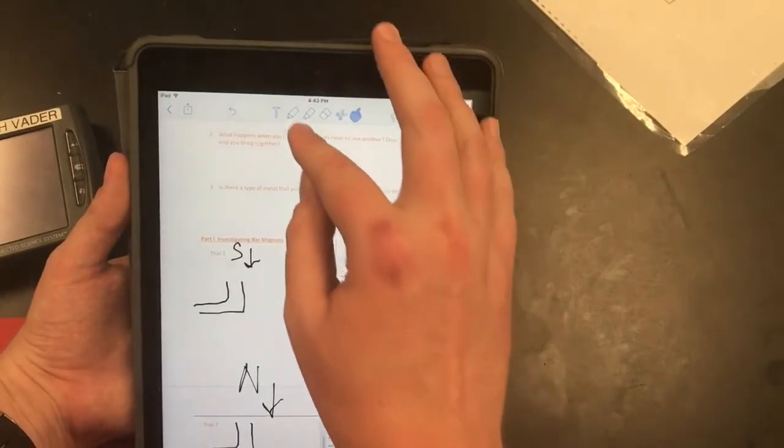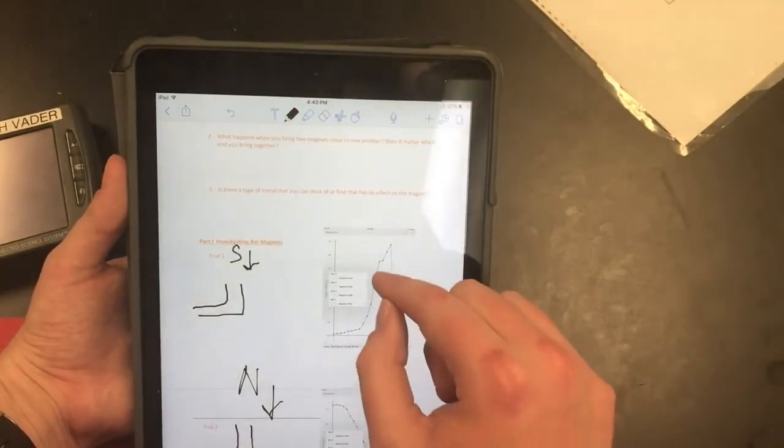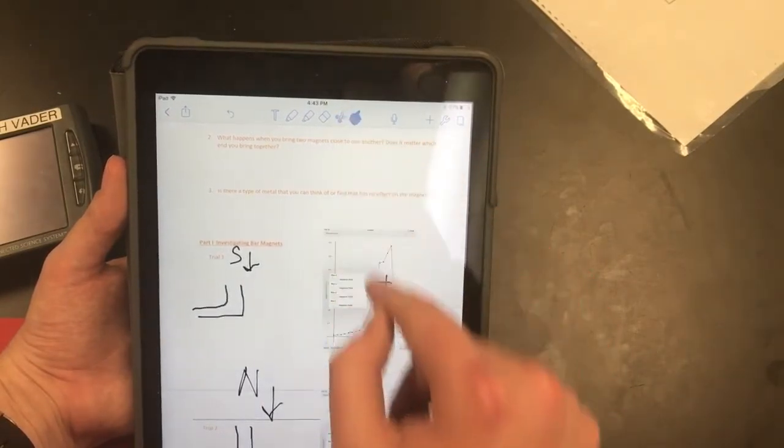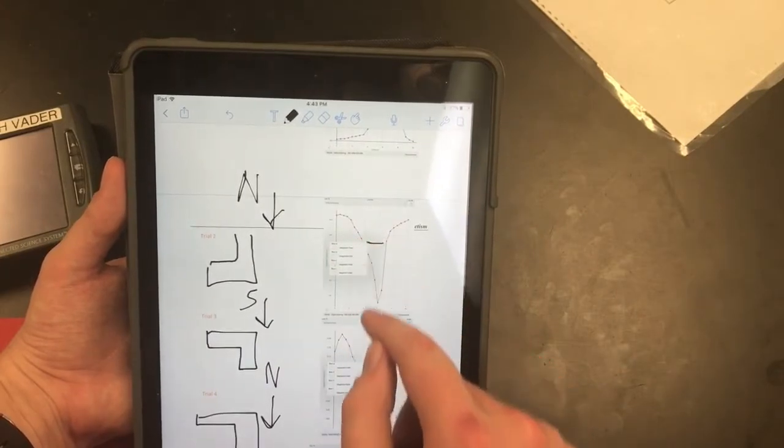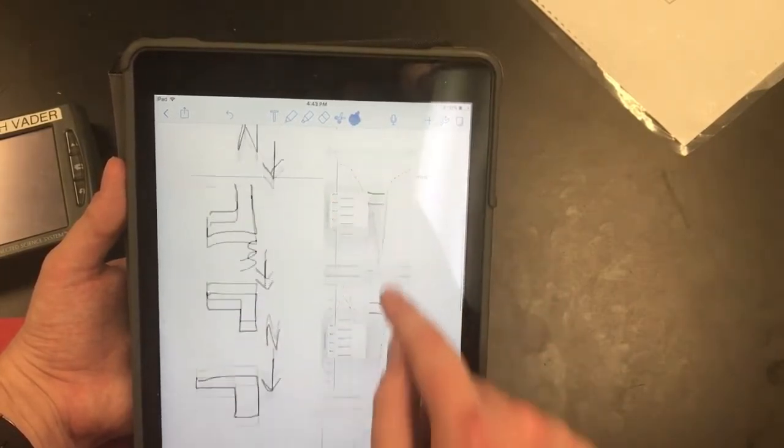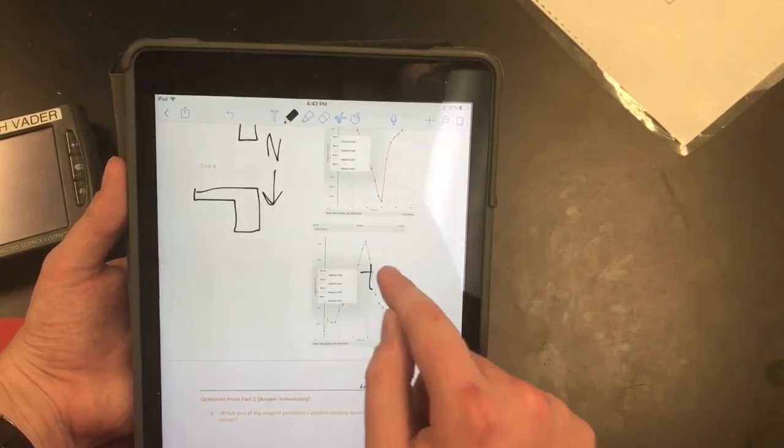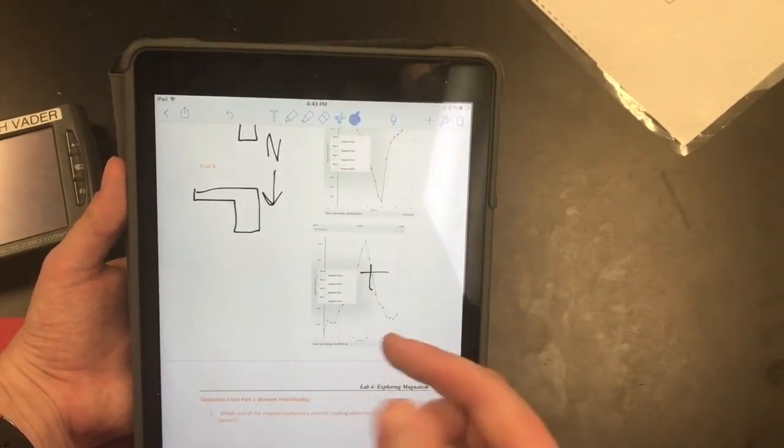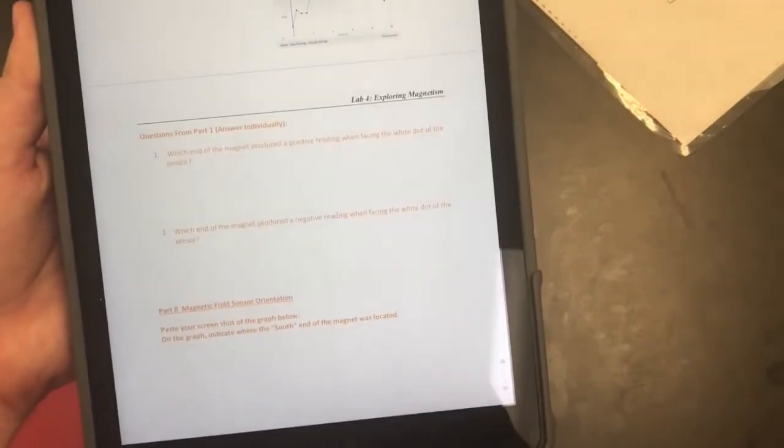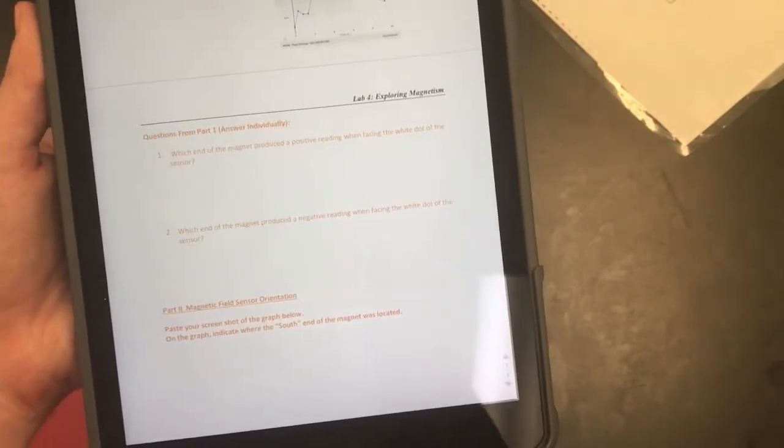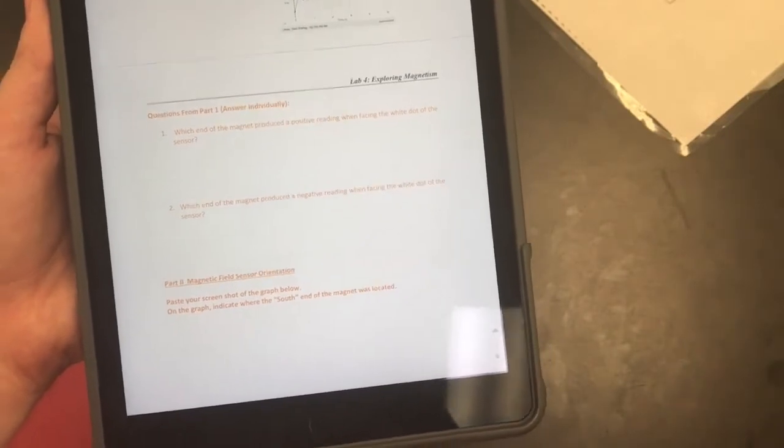If we look at the values here, I'm going to label in—anything above that x-axis is going to be a positive value, so we had a positive value here. What we just talked about should be all you need to answer the last two questions for part one. Let me know if you have any questions with that, and once you're done filling that out, we're going to move on to part two.